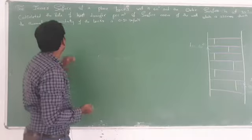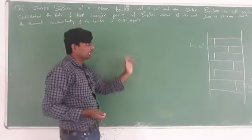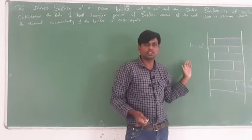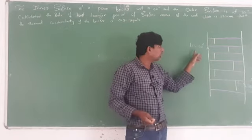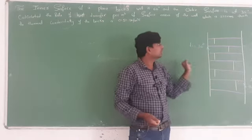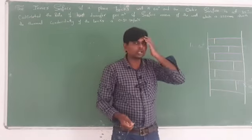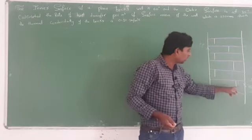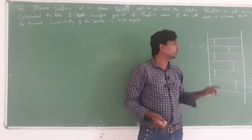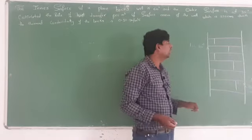The inner surface of a plain brick wall is 60 degrees. So this surface is the inner surface at 60 degrees, and the outer surface is equal to 35 degrees. Inner is equal to 60 degrees, outer is equal to 35 degrees.